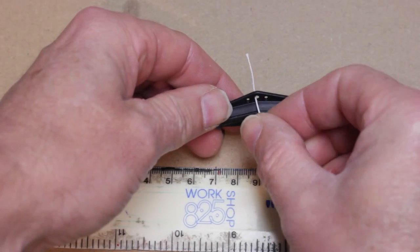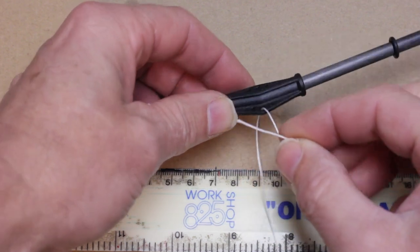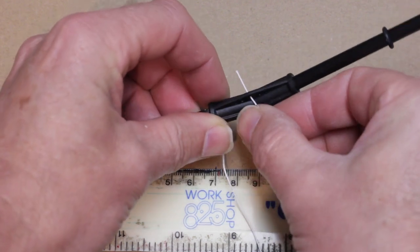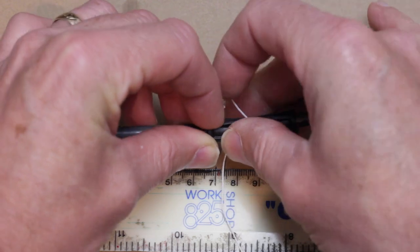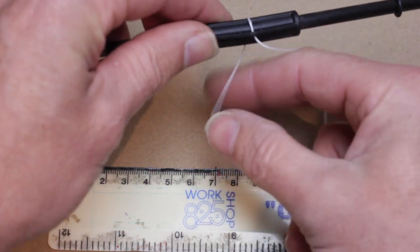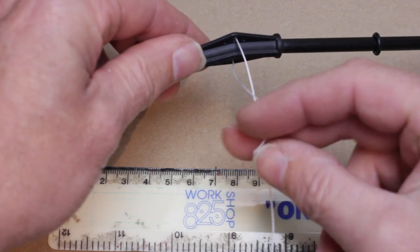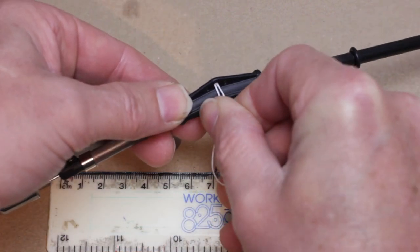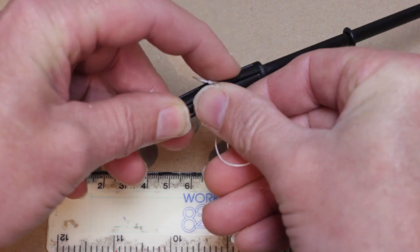The other end of the dyneema now goes through the lower middle hole of the tube joiner, then round the back and through the top middle hole of the tube joiner. Bring it back down again on the other side through the bottom middle hole again and then lead it forward towards the weight.